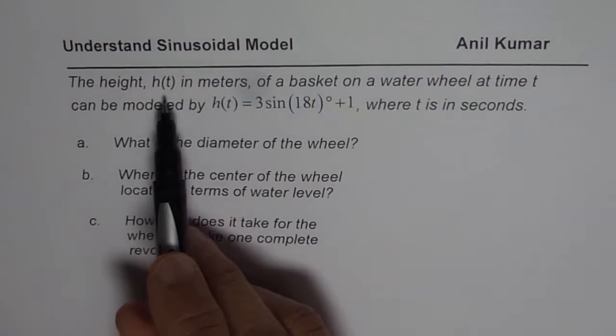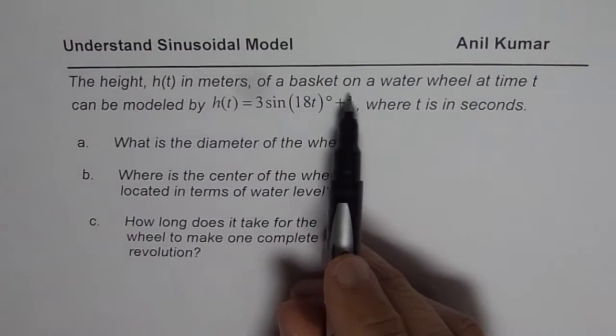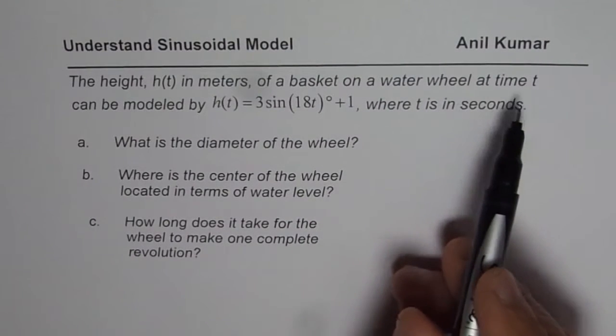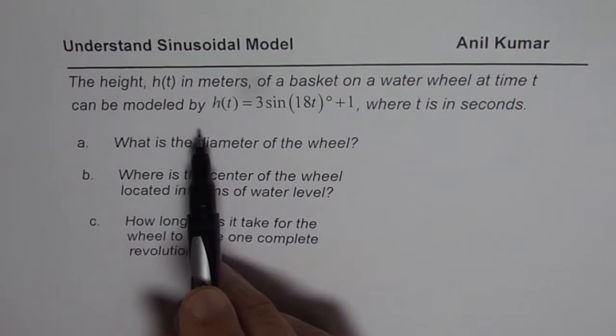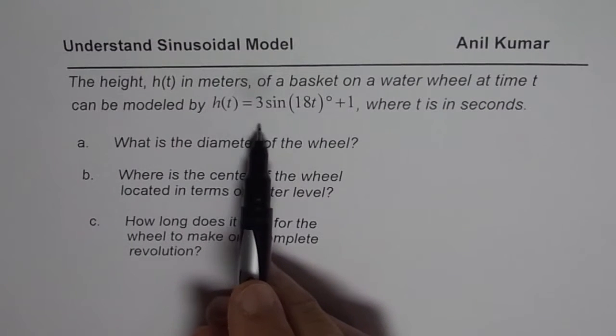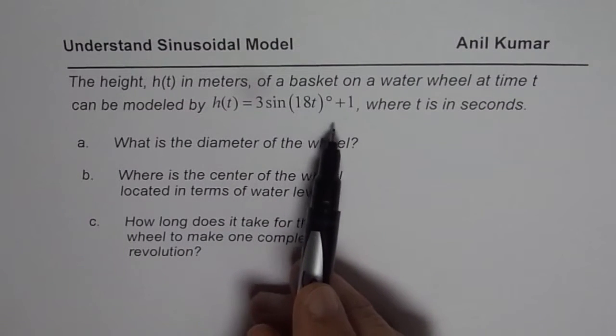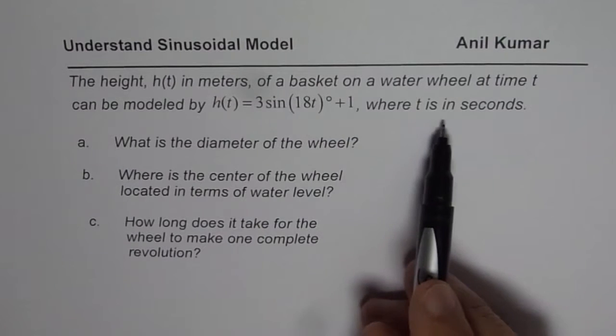The height h(t) in meters of a basket on a water wheel at time t can be modeled by h(t) = 3sin(18t) + 1, where t is in seconds.